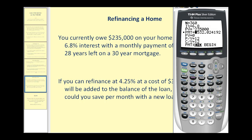Let's go back to the calculator and set this up. We're going to have a 30-year loan, so N is going to be 30 times 12, which is 360. The new interest rate will be 4.25%. The present value of the loan is going to be $235,000 plus the extra cost of $3,500, so the present value is going to be negative $238,500. We do have to remember that present value is always going to be negative when you take a loan out. The payment we don't know — that's what we're trying to determine. So we clear this and press alpha enter to calculate the new payment, which looks like it's going to be roughly $1,173.28.